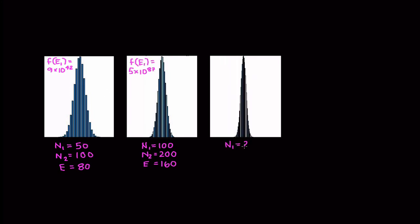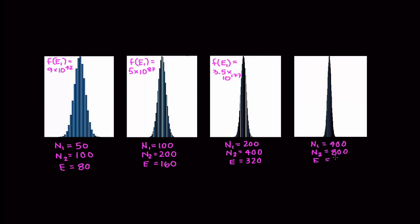Look at how peaked this graph is. With increasing number of particles, the graph becomes more and more strongly peaked. Remember, in a realistic situation, the number of particles is going to be on the order of Avogadro's number, which means the distribution of energies will be highly peaked with a very small standard deviation.